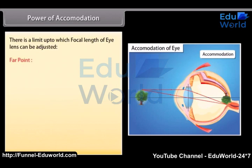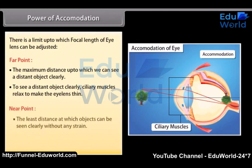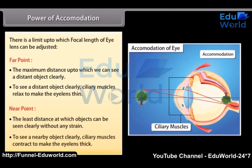Far point — the maximum distance up to which we can see a distant object clearly. To see a distant object clearly, ciliary muscles relax to make the eye lens thin. Near point — the least distance at which objects can be seen clearly without any strain. To see a nearby object clearly, ciliary muscles contract to make the eye lens thick.